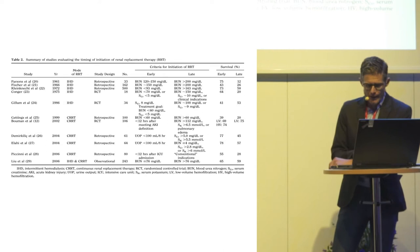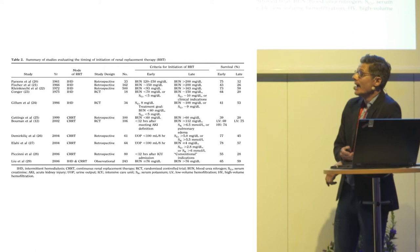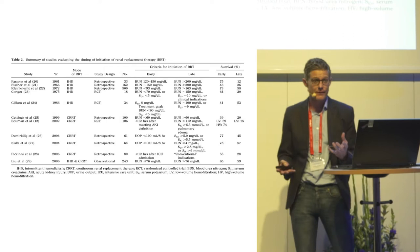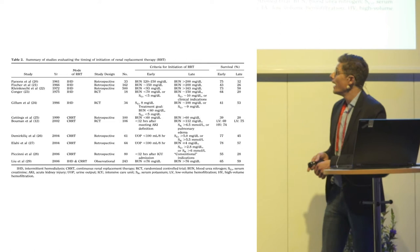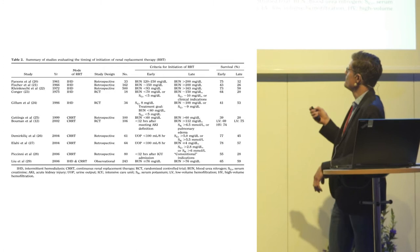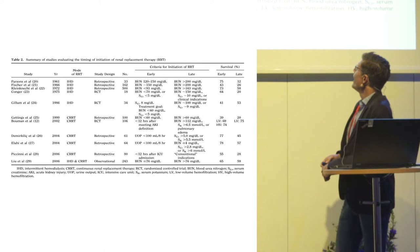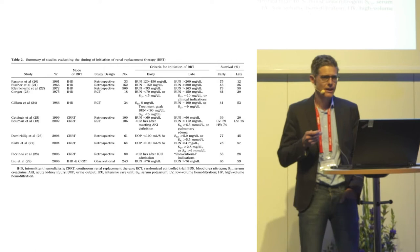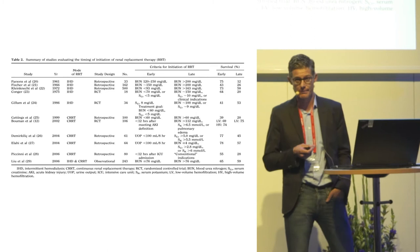The problem with these studies, especially the observational studies, is that they are highly confounded by different illness severity in patients who receive treatment early versus late. Another major problem is the use of very different cut-offs to define early and late — in older studies mainly using urea. And these studies never included patients with equally severe AKI who never received RRT.